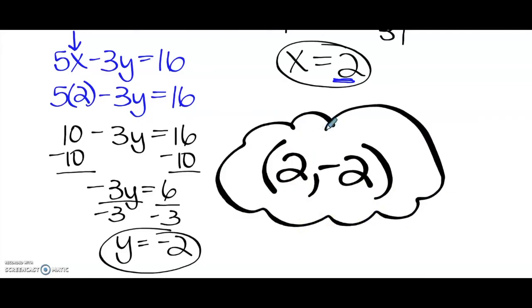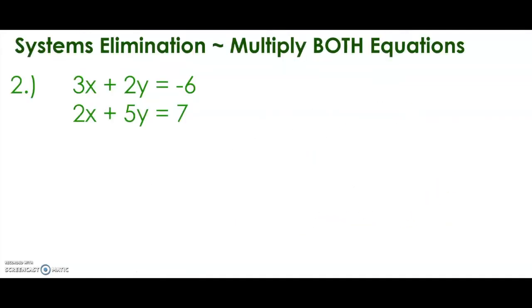Let's try one more example where we're having to multiply both equations. Looking at the coefficients, everything here is positive as far as the coefficients go. So I am going to also have to change signs because, remember, we need like coefficients with opposite signs on the same variable. So I've got a 3 and a 2 here. I can make those both 6. One would have to be negative. So I'm going to go that route to eliminate x.